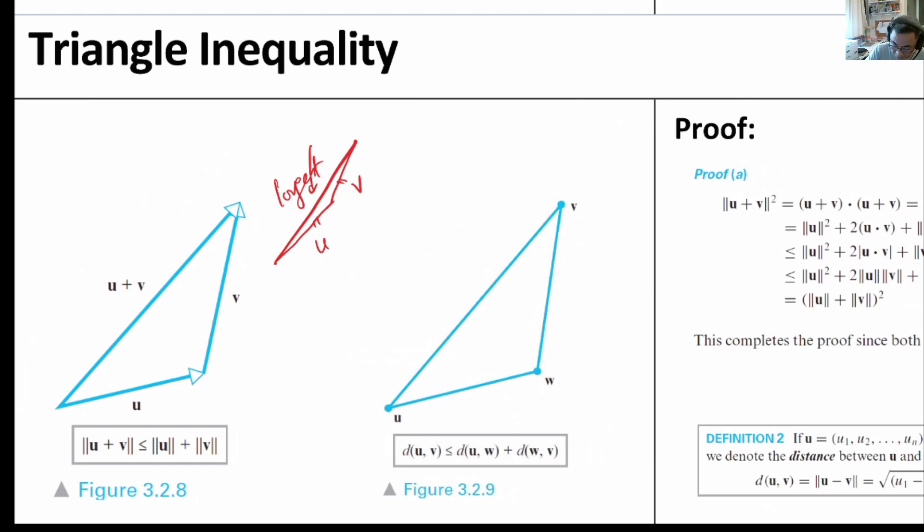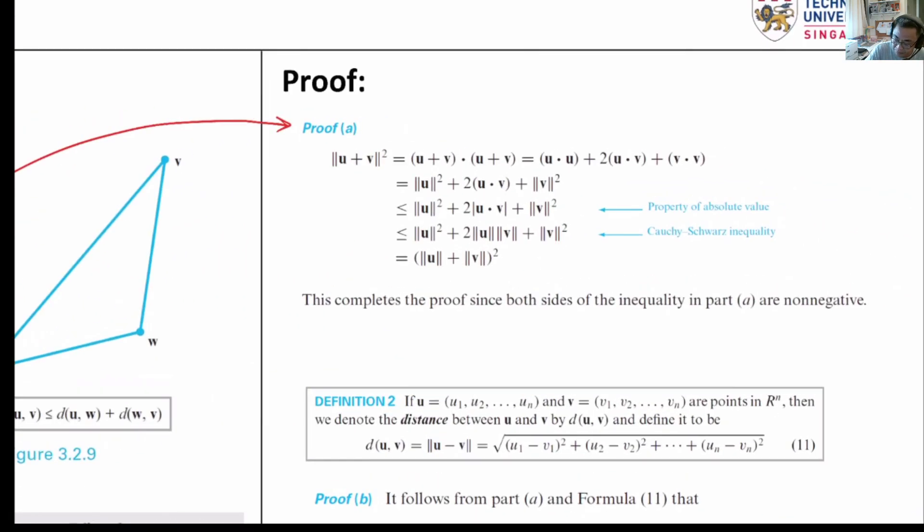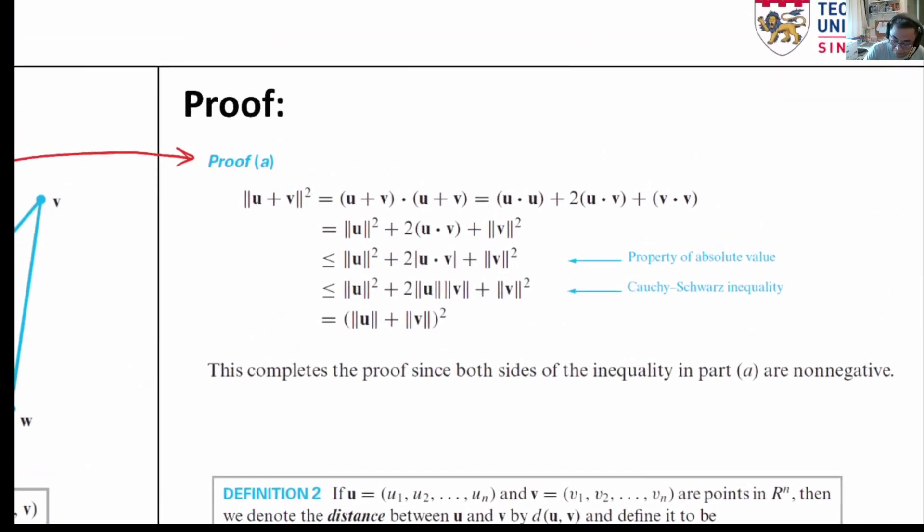Let us now see the proof of this equation over here. Let W equals to U plus V. Remember that the norm of W can be written as W dot W square root. So we now understand how this first line is gotten.